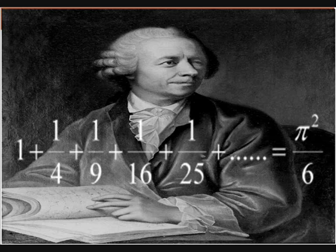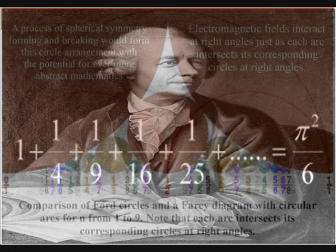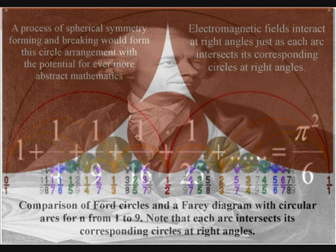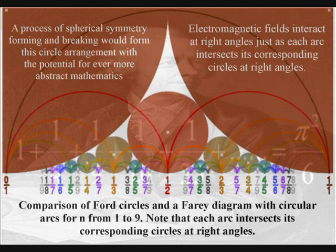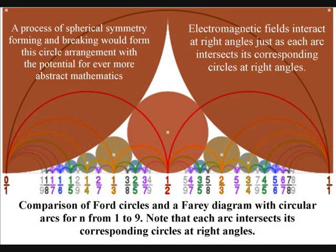It can seem crazy that pi is squared and connected to this infinite series, but if human mathematics is based on the dynamic spherical geometry of the universe it would be logical to find pi with its connection to circles. We can see with Ford circles that this geometry is a universal part of mathematics.